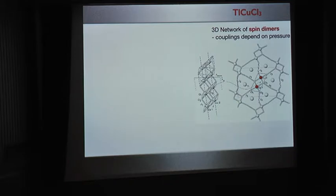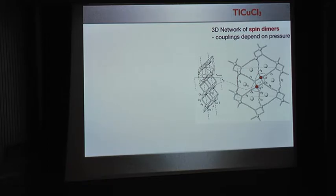By symmetry — and confirmed many times — this phase transition is in the universality class of the three-dimensional Heisenberg model, the O(3) universality class. This transition has an experimental realization in the compound thallium copper chloride, which consists of a network of dimers of copper atoms with unpaired spin-1/2, where the intra-dimer couplings are strong enough for singlet formation.